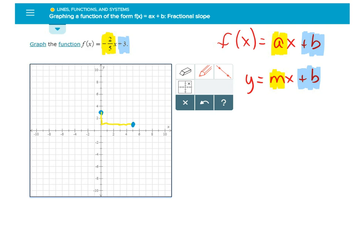If I did it again, I would go down 1, 2, over 1, 2, 3, 4, 5, and there's another point on my line.